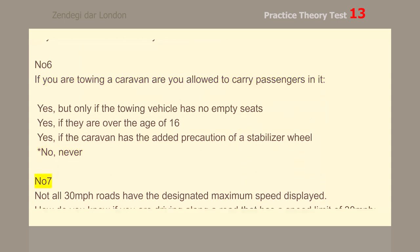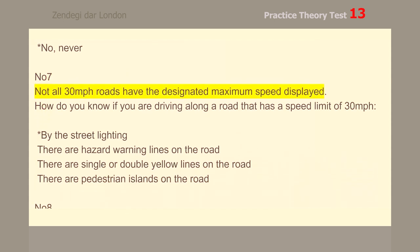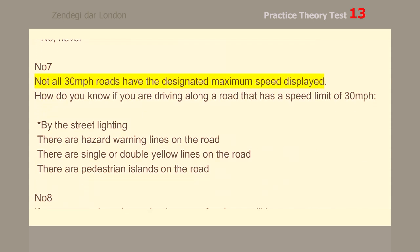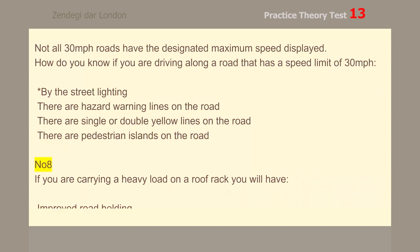Number 7. Not all 30 mph roads have the designated maximum speed displayed. How do you know if you are driving along a road that has a speed limit of 30 mph? By the street lighting.